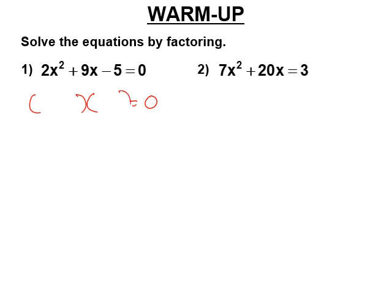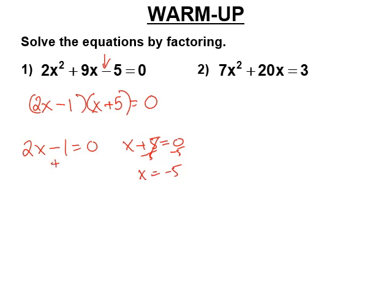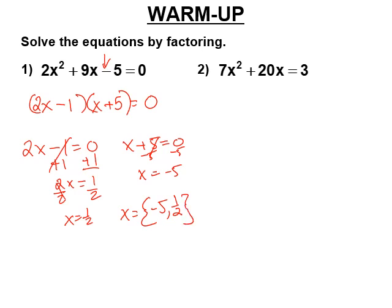We're finding the factors of that. It must start with 2x and x. It's minus there, so one is plus and one is minus. The plus 5 goes there, the minus 1 goes there — that makes 9x in the middle. That is not the answer; the answer is what makes that zero, the factors equal to zero. Negative 5 makes that one equal to zero, and positive one-half makes that one equal to zero. So x equals negative 5 and one-half.